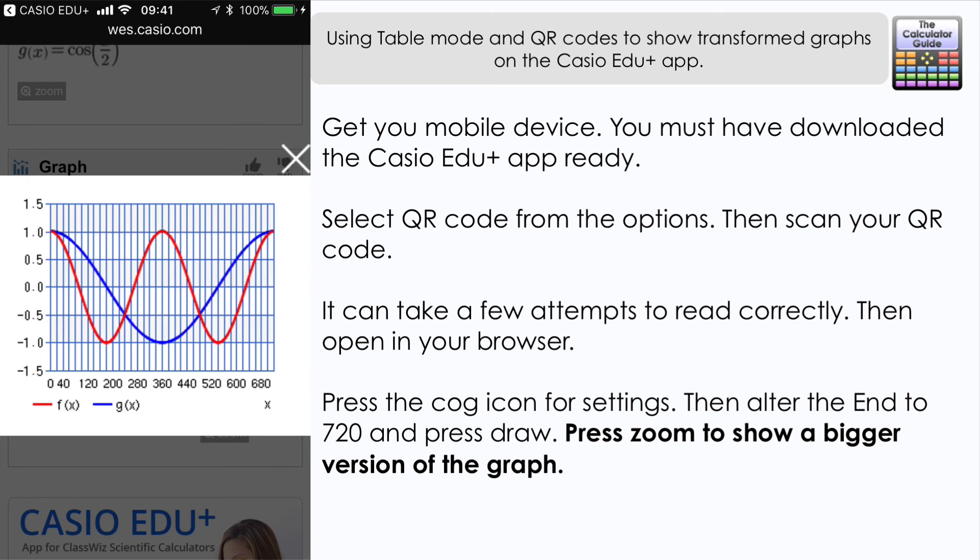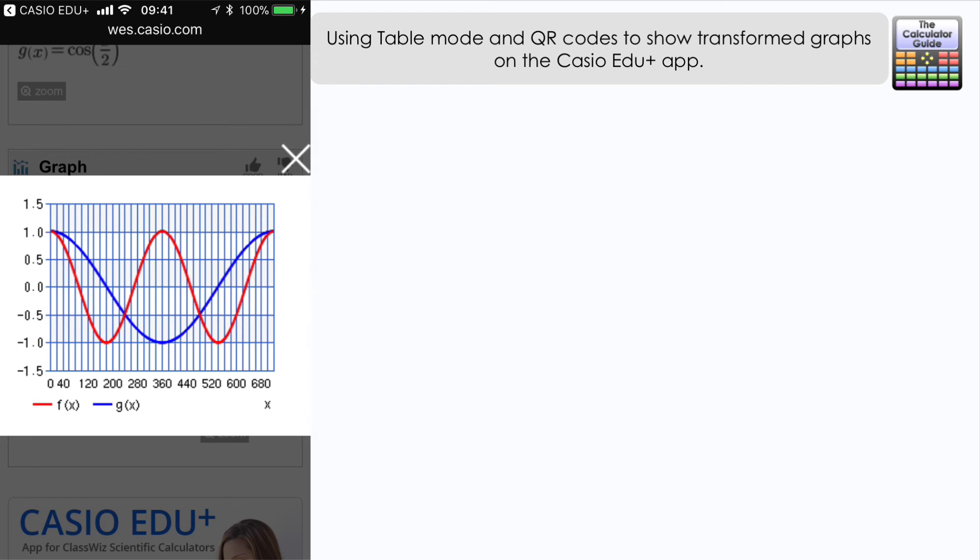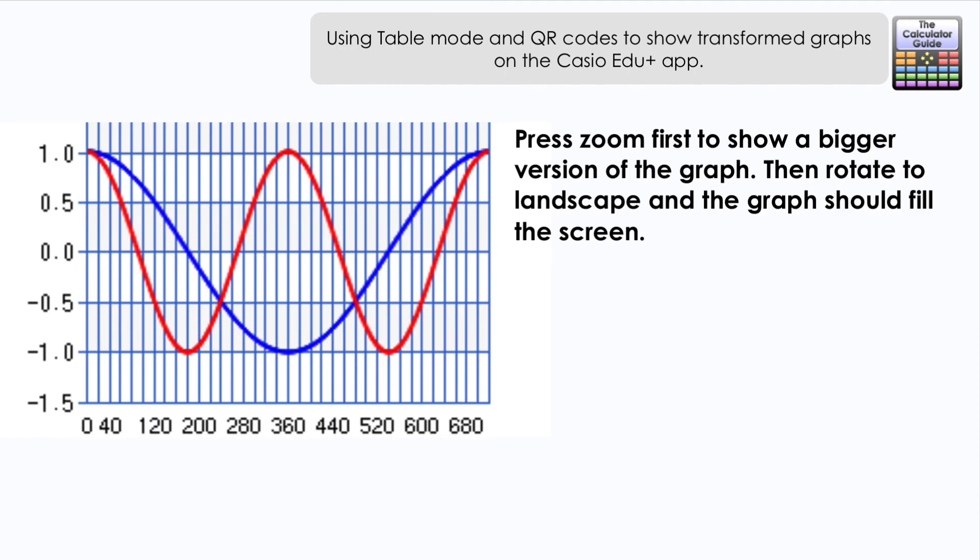And if you wanted to look at the graph a little bit larger you can change this to landscape by rotating your phone. It won't come across as clearly on my video here but you rotate it and it will take up the full size of the phone screen so that you can have a look at the graph in a little bit more detail.